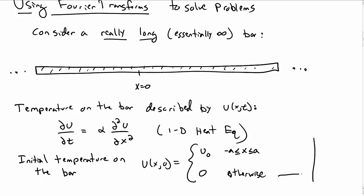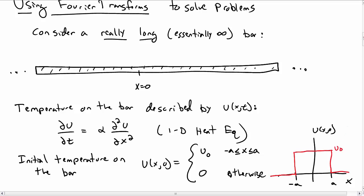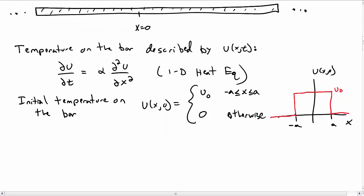So if I were to make a plot of what this initial condition would look like at t equal to zero as a function of x, it would only be non-zero in between negative a and a, so it's essentially a box, and at that point it's a value of u₀.